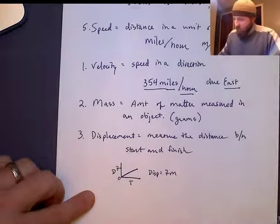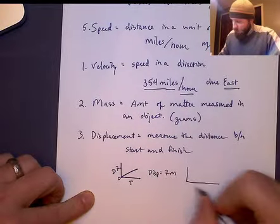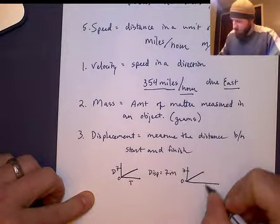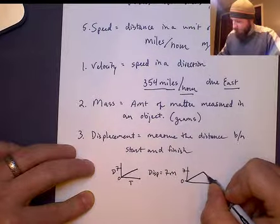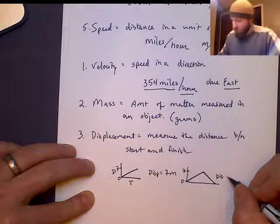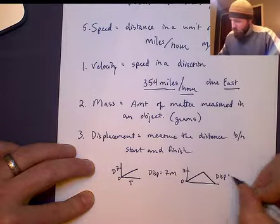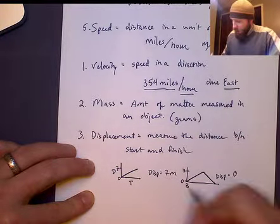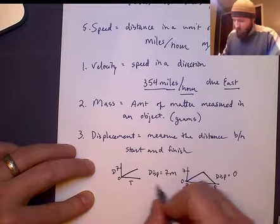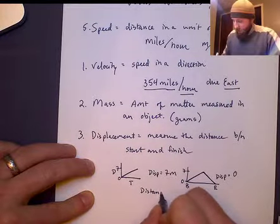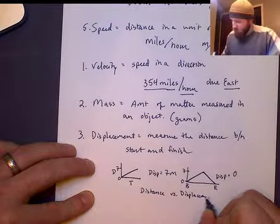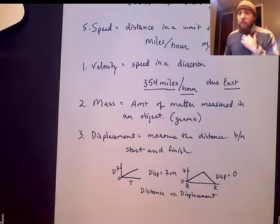Distance is on the side, time on the bottom. If you start at zero and reach seven meters, your displacement is seven meters. But if your graph shows you starting at zero, reaching seven meters, then returning to the origin, your displacement is zero, because the beginning and end are at the same location. There's a difference between distance and displacement.